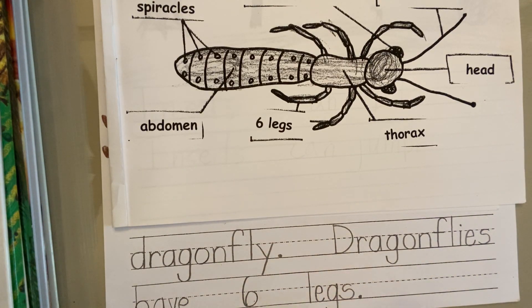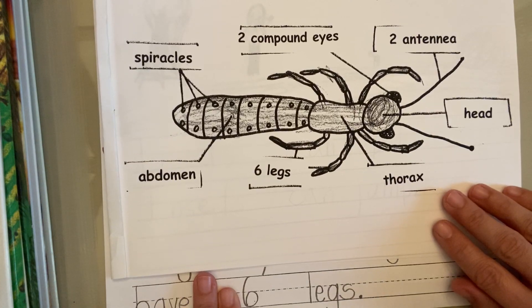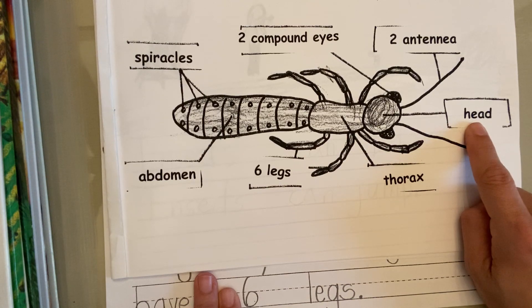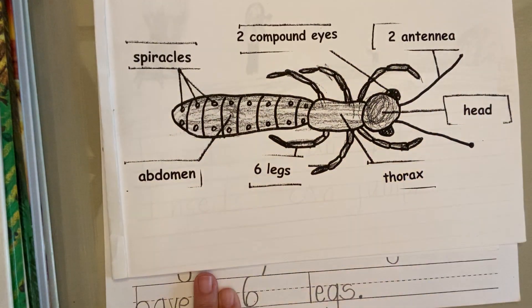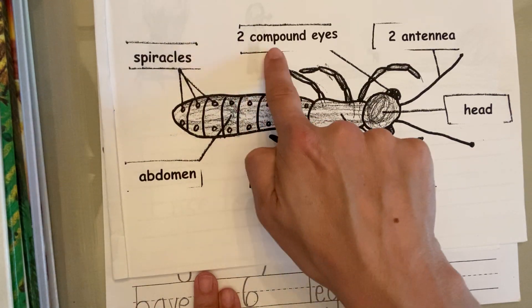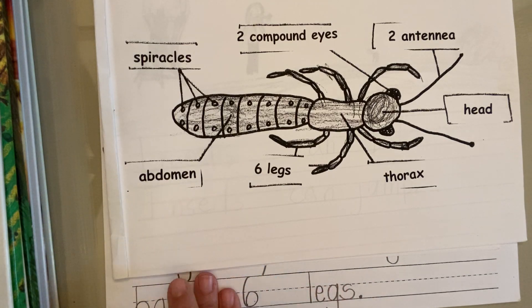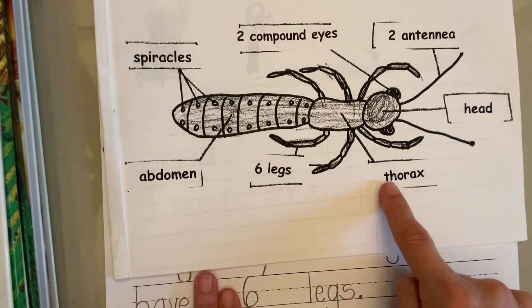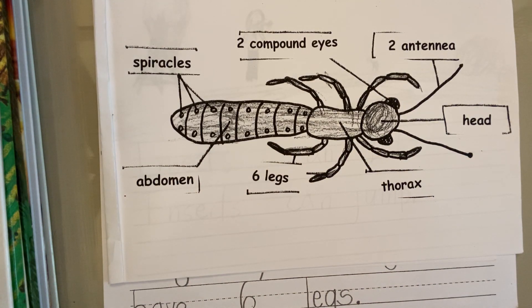Now it's your turn to finish your sentence about dragonflies: 'Dragonflies have...' Put your two finger spaces on after 'have' and look at all the parts of the insect. Do you want to say 'dragonflies have a head'? You can write that. 'Dragonflies have two antenna'? You can write that. 'Dragonflies have two compound eyes'? You can write that. 'Dragonflies have spiracles'? You can write that. 'Dragonflies have an abdomen'? You can write that. You can write mine: 'dragonflies have six legs.' Or 'dragonflies have a thorax.' I want you to look at my poster here and pick what you want to write. Push pause and finish your sentence. Go.